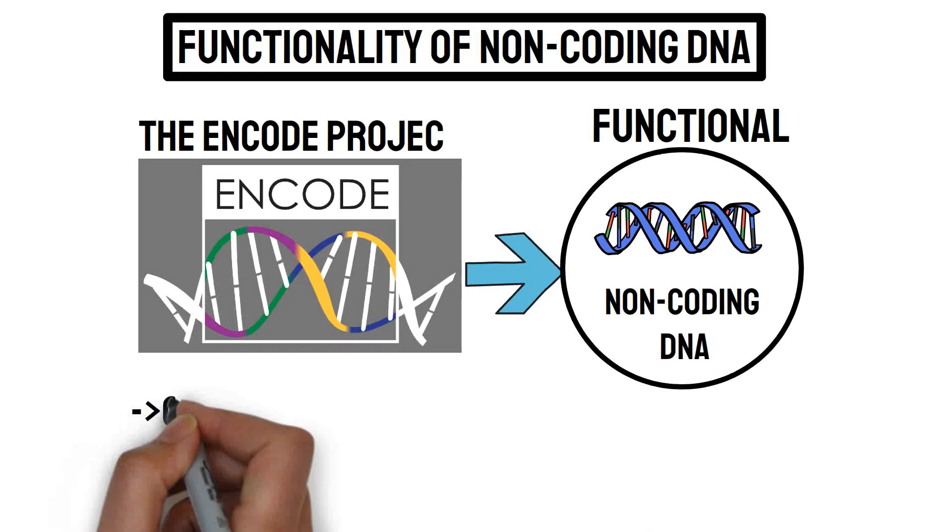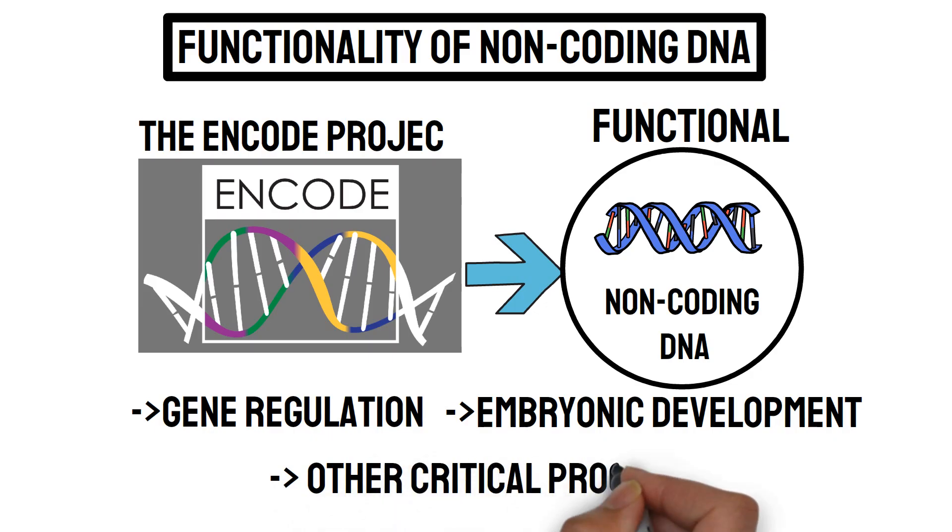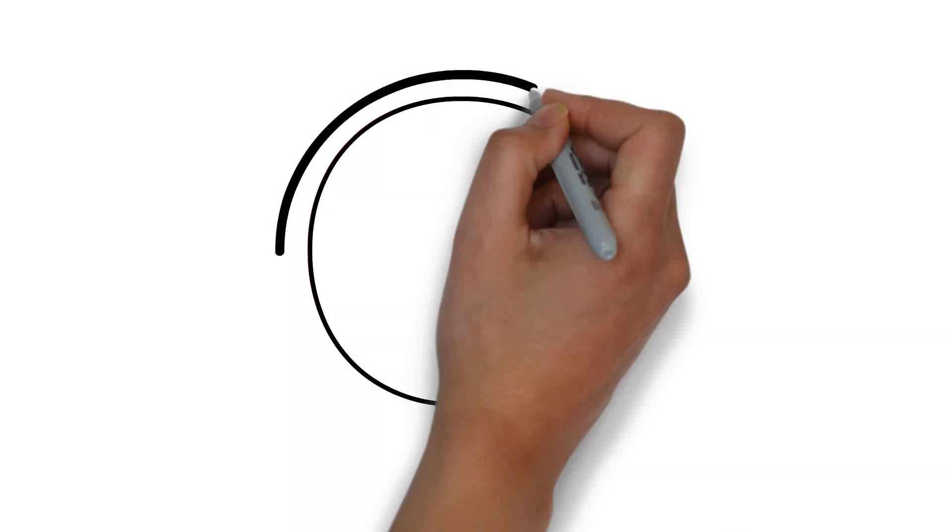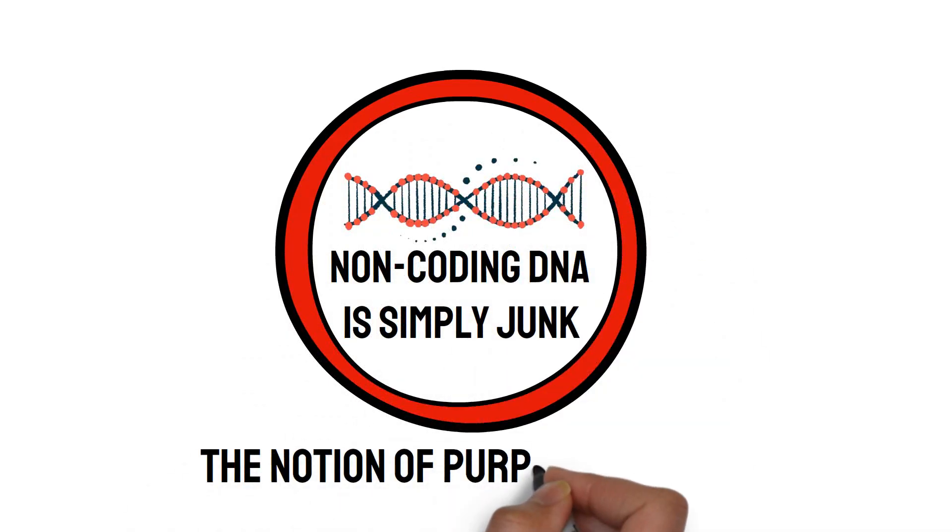the ENCODE project and other studies have shown that large portions of non-coding DNA are functional, playing roles in gene regulation, embryonic development, and other critical processes. This discovery refutes the idea that non-coding DNA is simply junk and aligns with the notion of purposeful design.